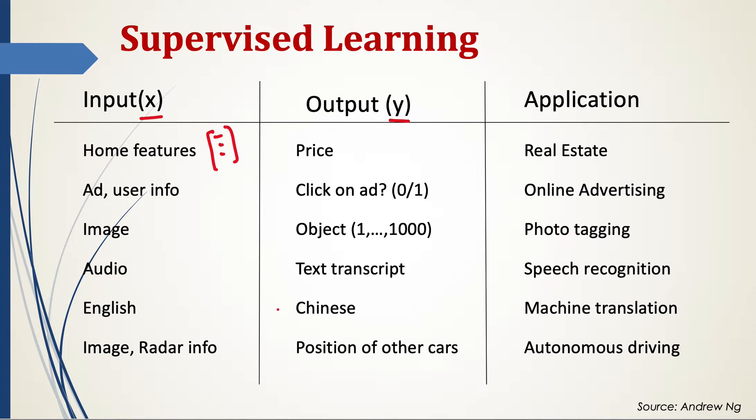And then audio from audio to transcript, similarly English to Chinese translation. And some complex example could be that in autonomous driving, we have a camera put on the car which takes the image and then we also have some radar info. So combining these two, we can predict the position of other cars on the road.